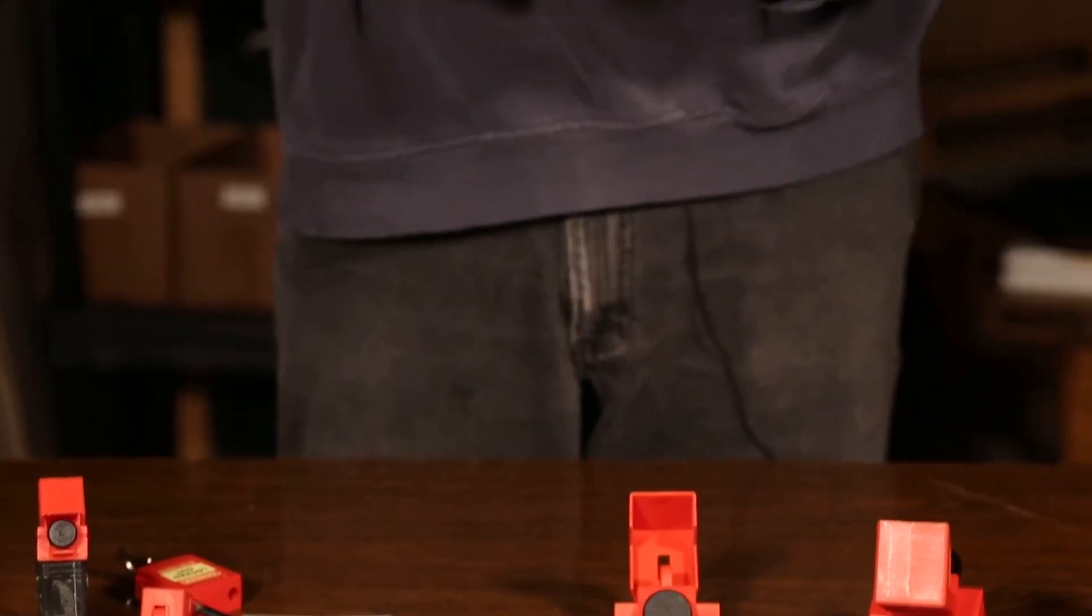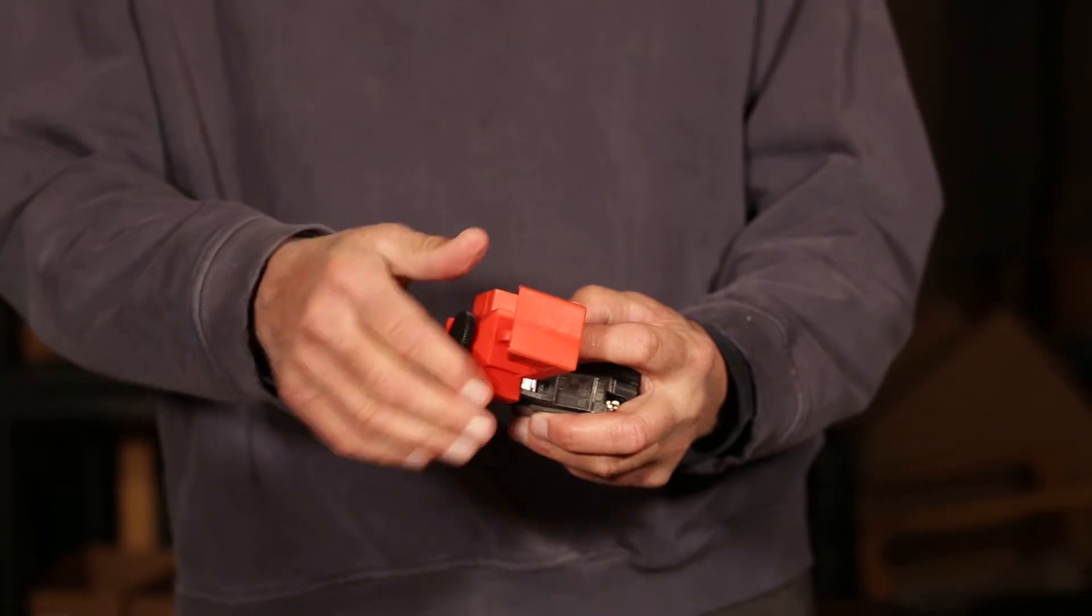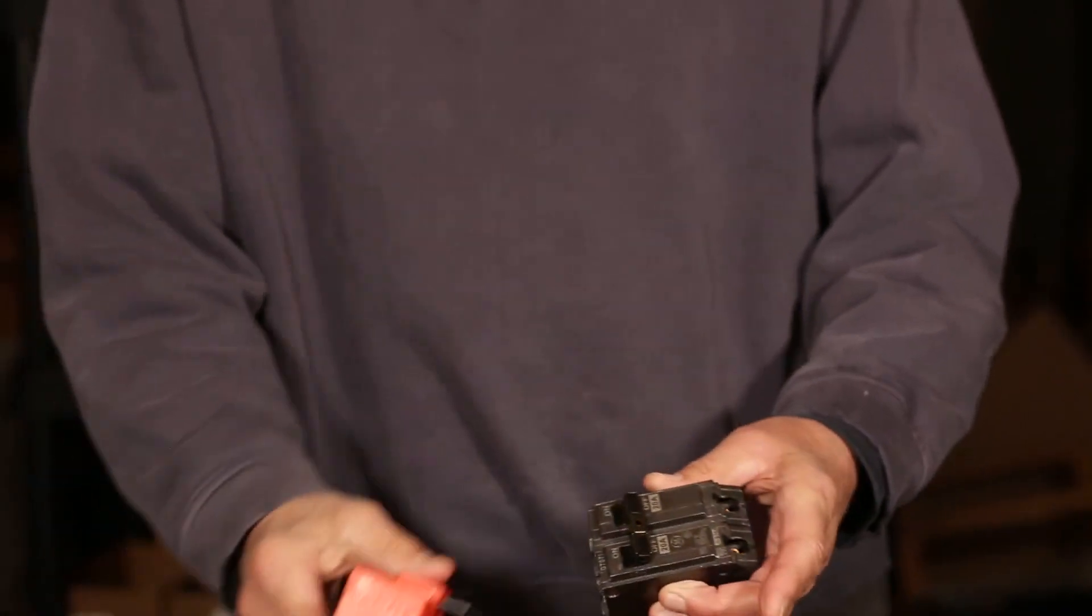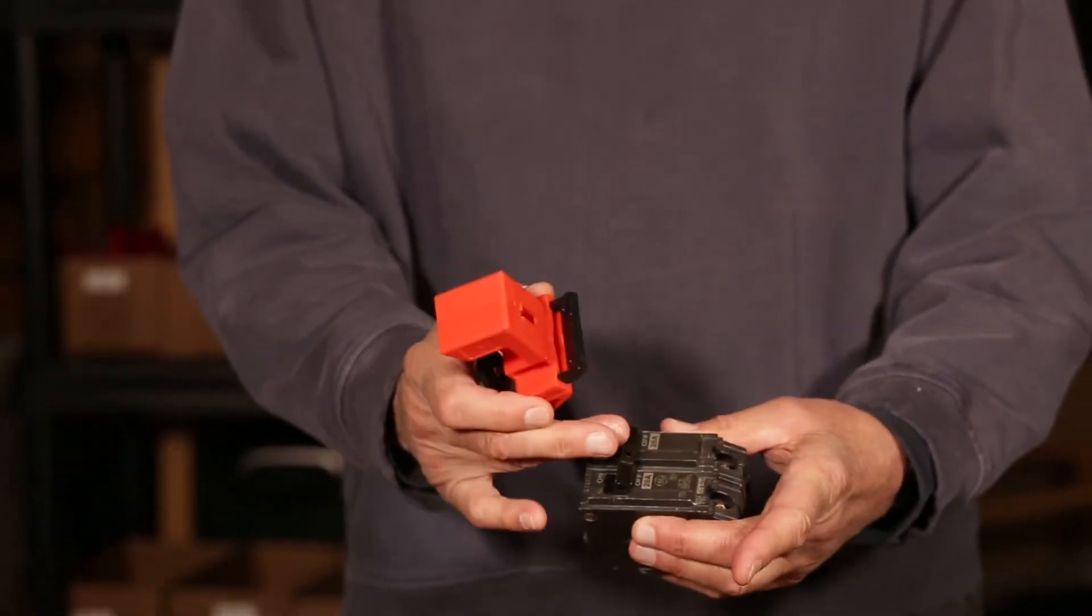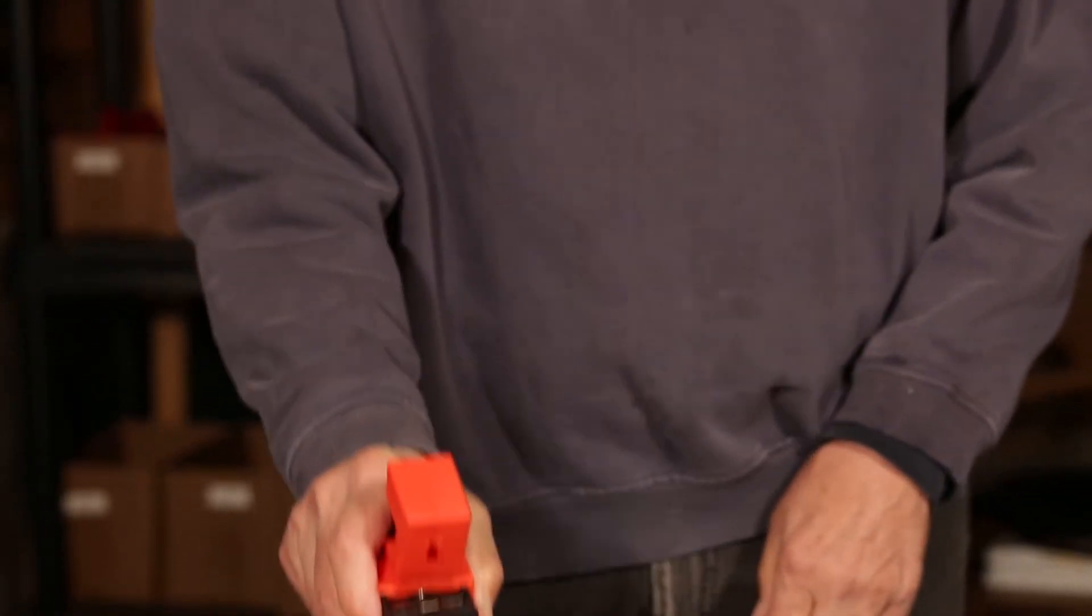The next size up is a 480 to 600 volt, typically a two-pole device. Same operation as the other one, only you have two poles instead of one. It goes over just like before, lock and tag go in it.